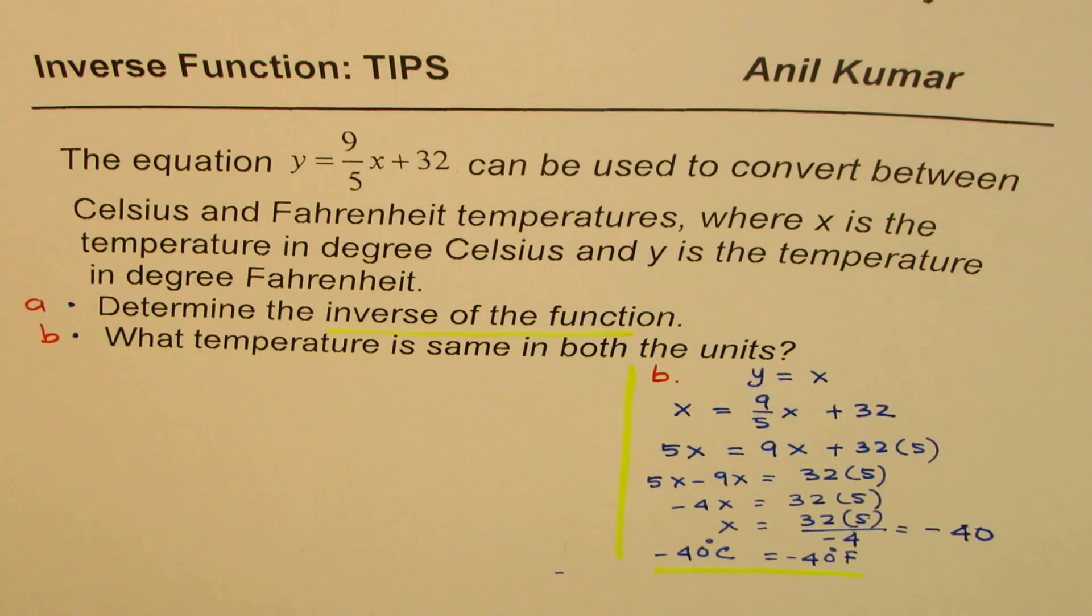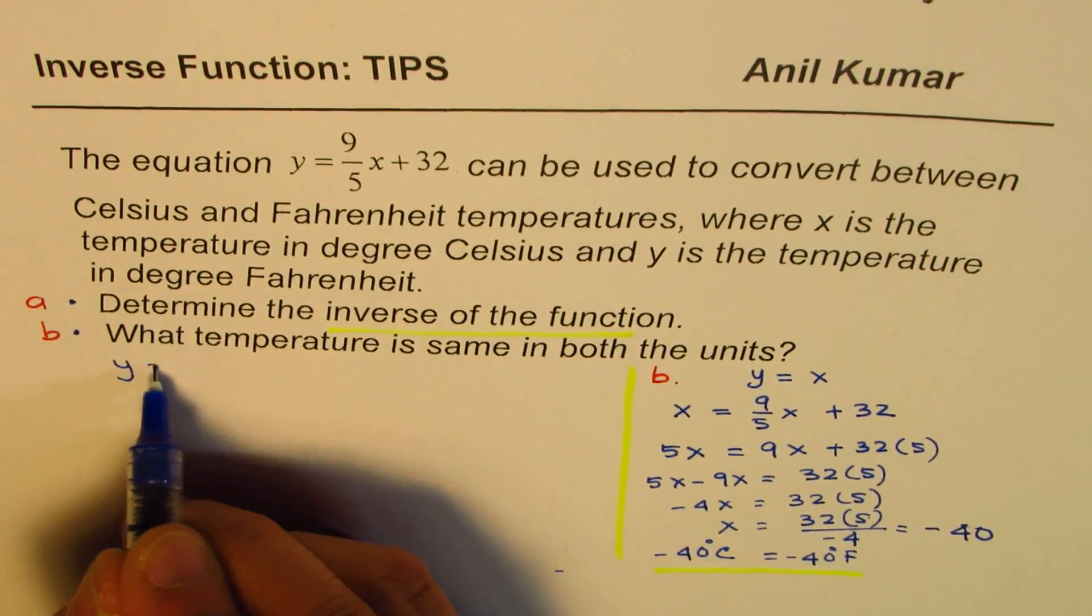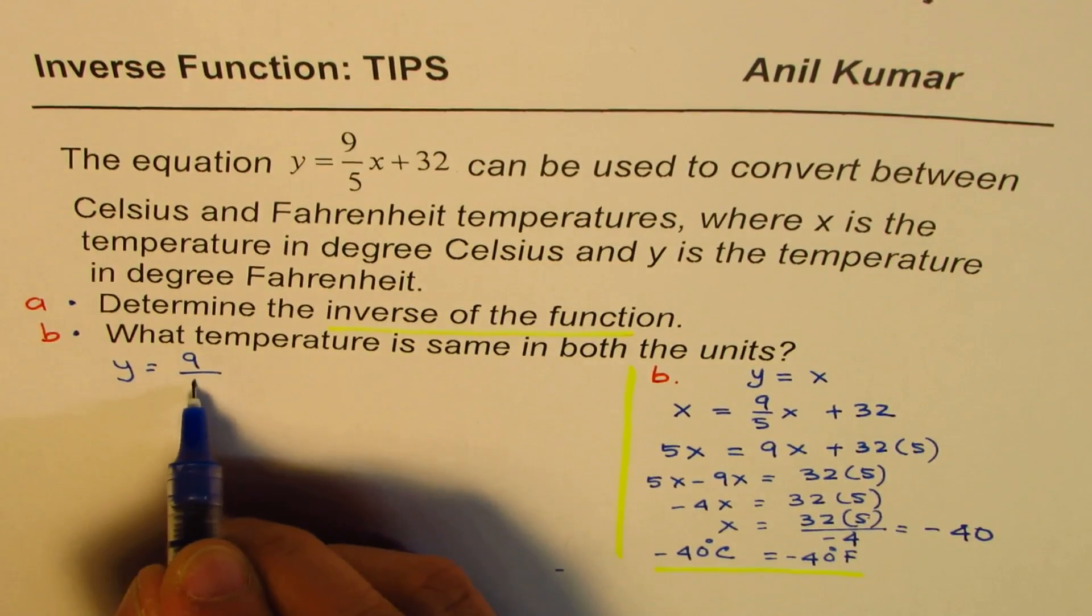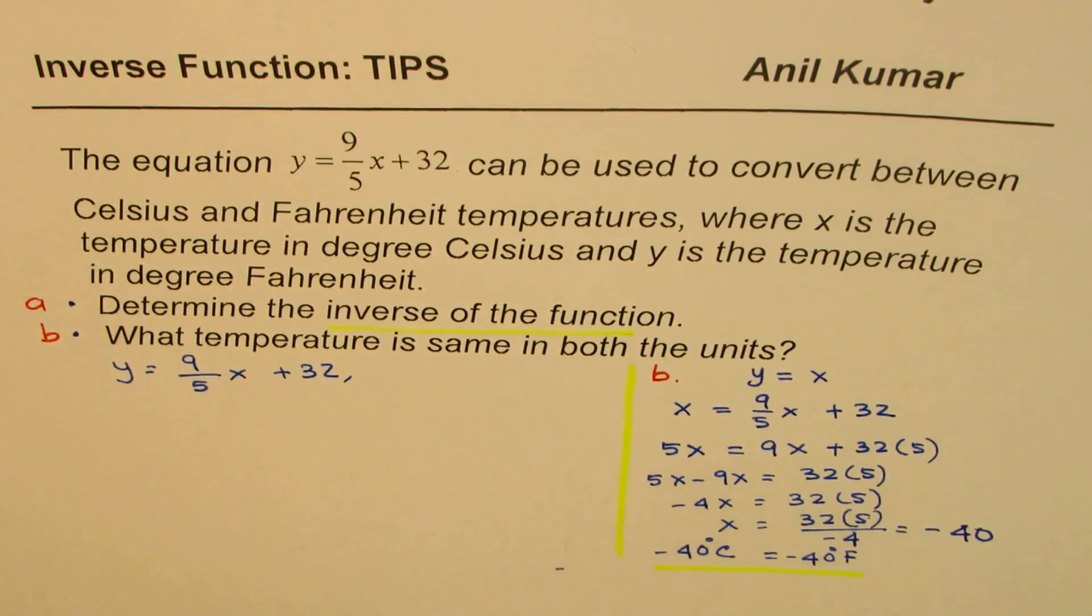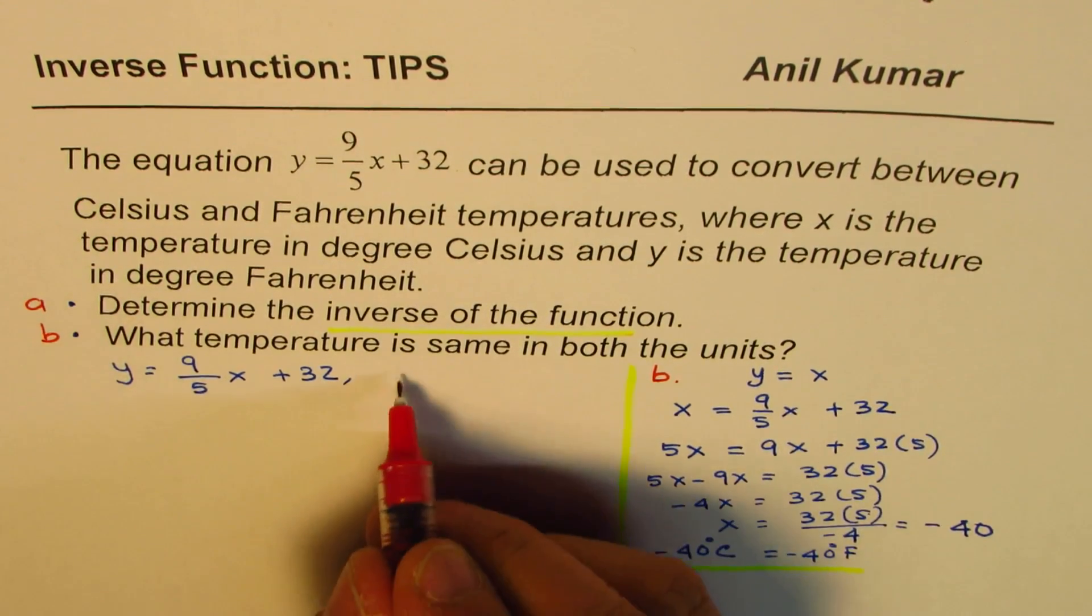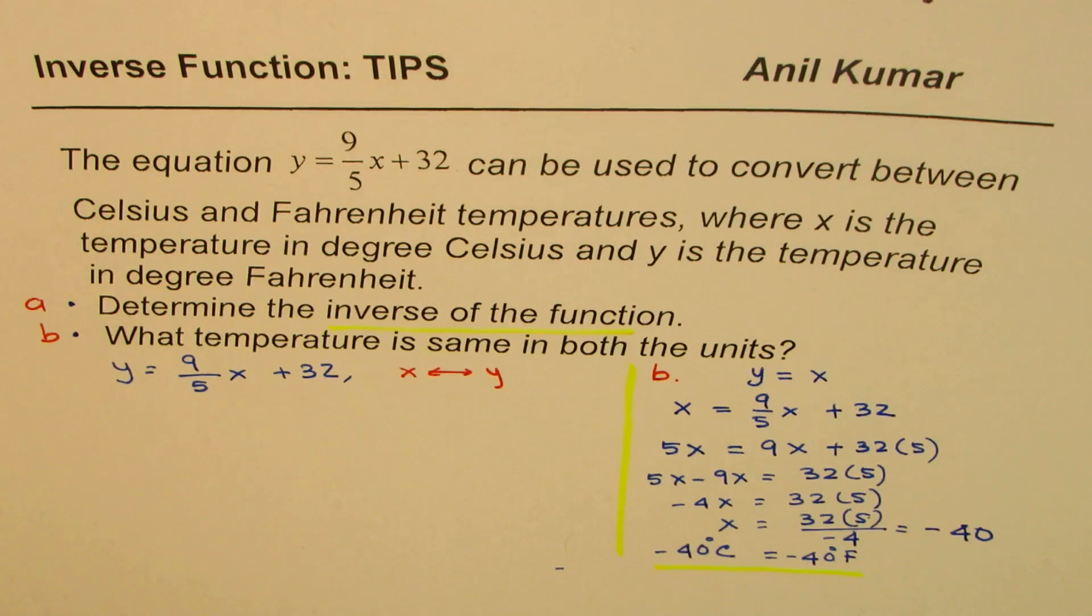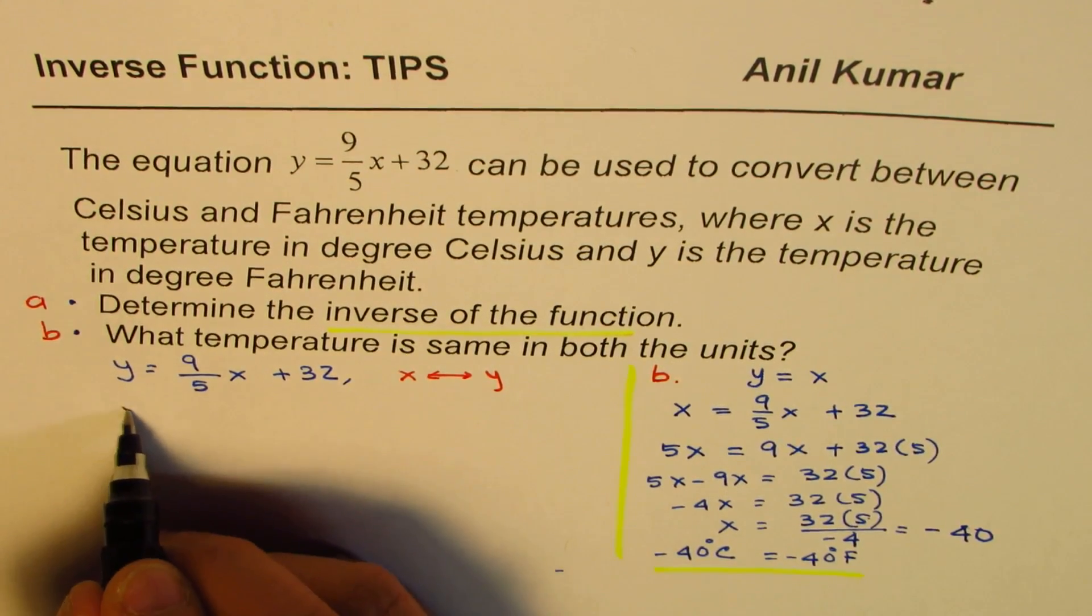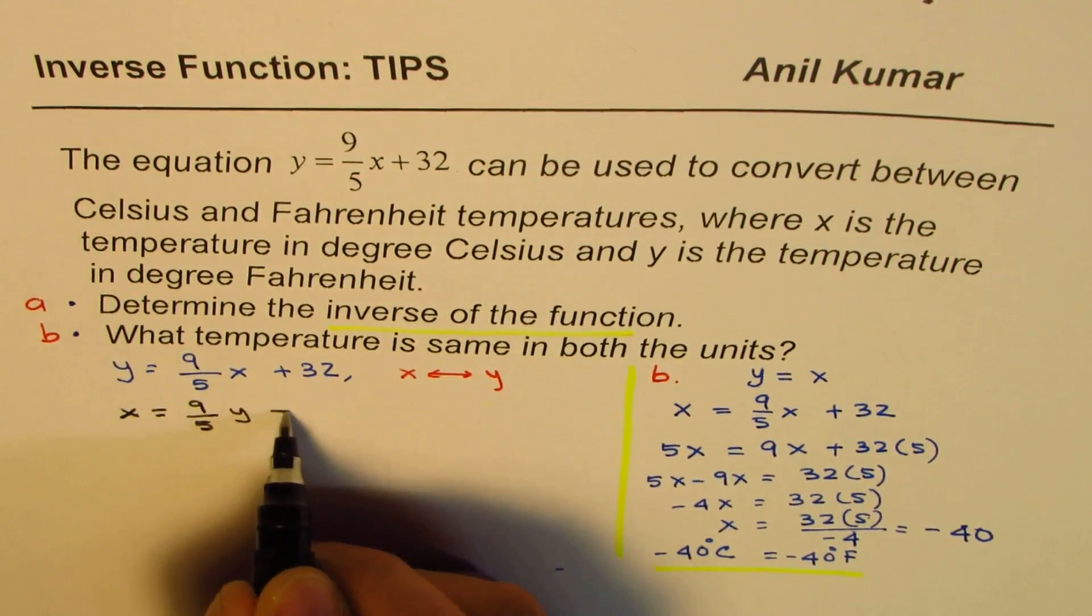Now, let us do this inverse function part. We are given the function y equals to 9 over 5x plus 32. To find inverse, we are going to swap x and y. We will interchange them and then solve for y.